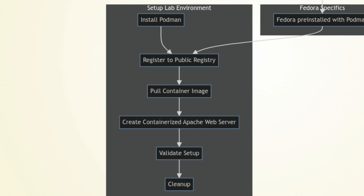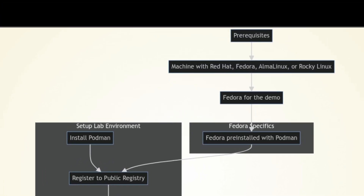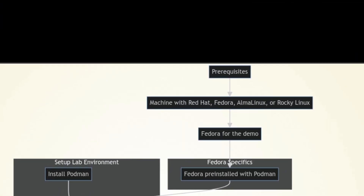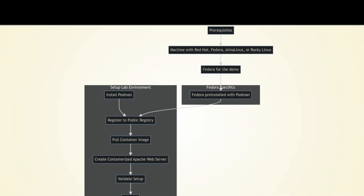Before starting the demo, I would first like to list the prerequisites for the lab environment. You will need a machine, virtual or physical, running either Red Hat, Fedora, Alma Linux, or Rocky Linux. I have Fedora for the demo. It's worth noting that Fedora comes pre-installed with Podman, so no further installation steps are necessary.